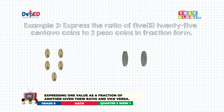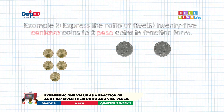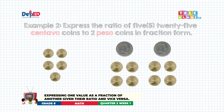Example number two: Express the ratio of five twenty-five centavo coins to two peso coins in fraction form. As we can see, the given quantities have different units — one is in centavo and the other is in peso. In order to express the ratio, we need the quantities to be of the same unit by converting one of them. In this case, we will convert peso into centavo. We know that in one peso, we have four twenty-five centavos. Therefore, in two pesos, we have eight twenty-five centavos. Since we already have the same unit, we can proceed in expressing the ratio.